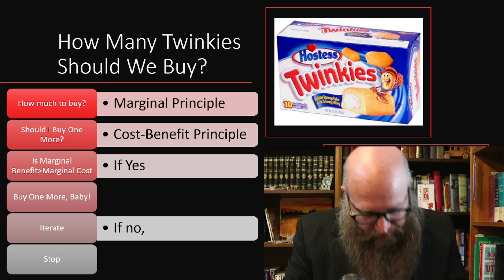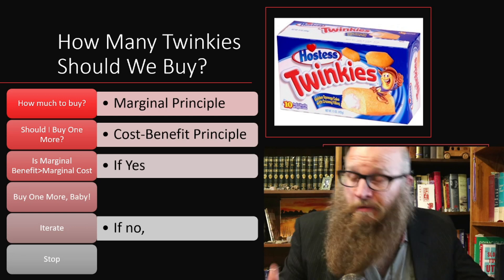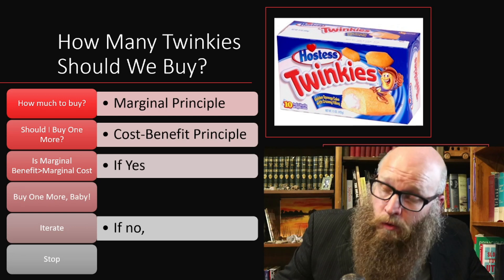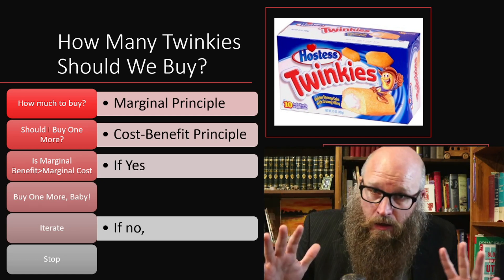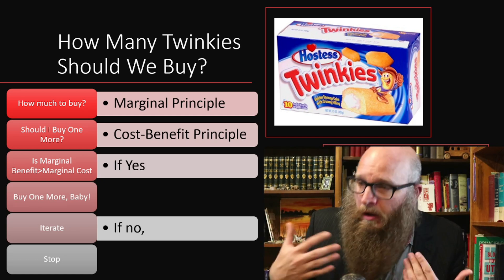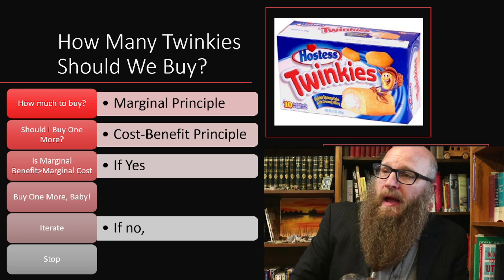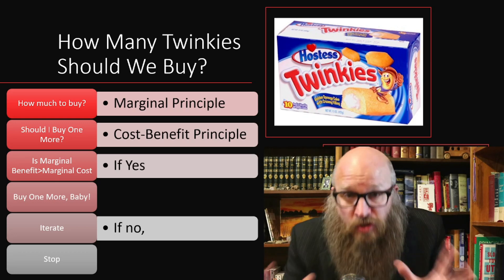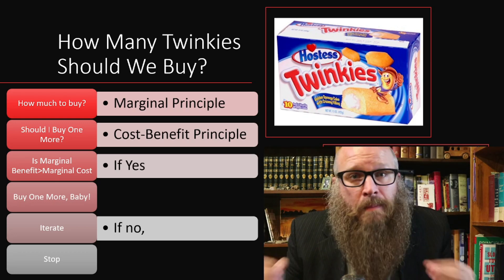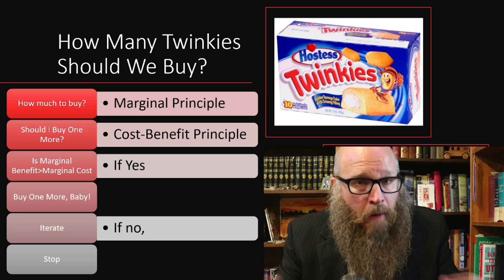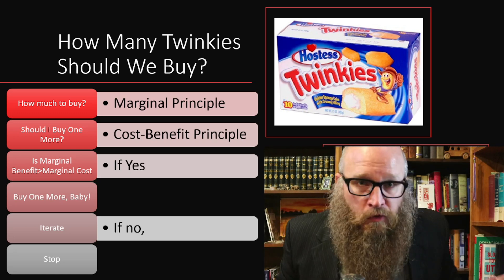However, at some point, this will happen to everybody. For some, it might be two or three Twinkies. For others, it might be 30 or 40. You're going to get full. The cost, the pain, the overbloated belly — it's just going to be too much, and you're going to have to say no. Eventually, the marginal cost will be bigger than the marginal benefit. That's the point that you stop. The marginal benefit keeps falling and the marginal cost keeps going up until eventually they're equal.